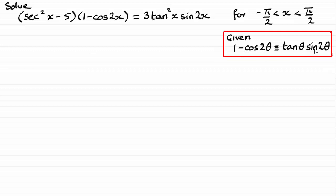so we're expected to use it. I can see straight away that in this equation, 1 minus cos 2x, if we replace theta with x, is the same as tan x sin 2x. So that must be where they want us to